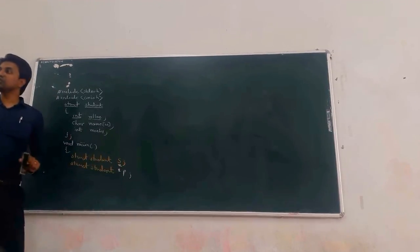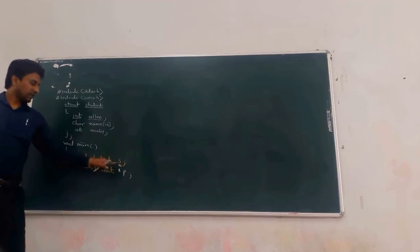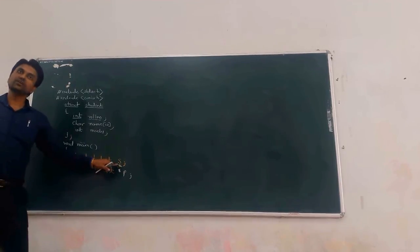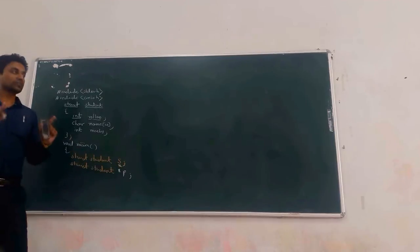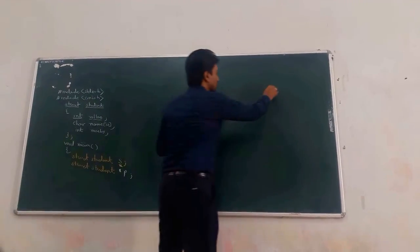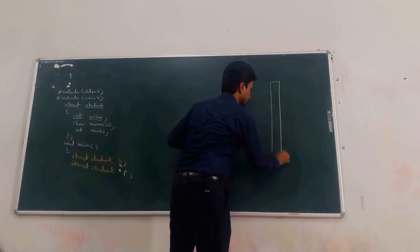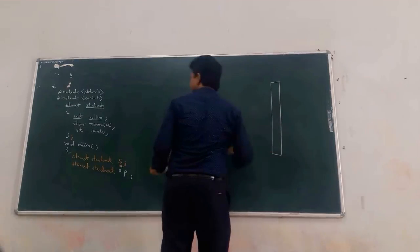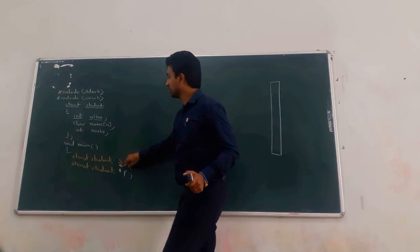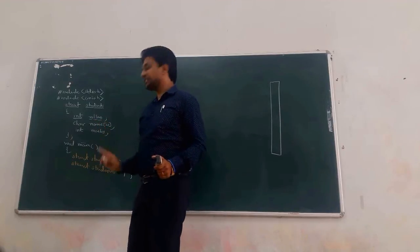This pointer type of variable stores the address of another valid variable, while S actually contains the value. So for memory management: for S, how many bytes are reserved? 2 plus 10 plus 2 — 14 bytes are reserved.